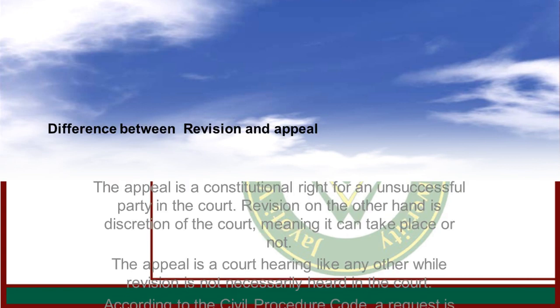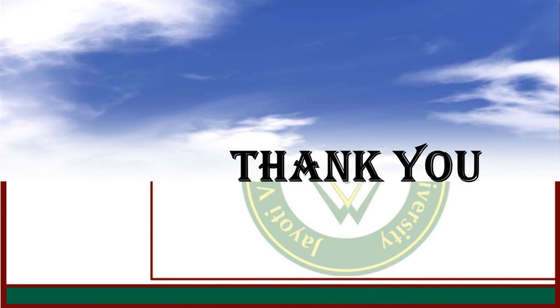Difference between revision and appeal: The appeal is a constitutional right for an unsuccessful party in the court. Revision, on the other hand, is discretionary, meaning it may or may not take place. The appeal is a court hearing like any other, while revision is not necessarily heard in court. According to CPC, revision is handled by a superior court — it must be a High Court.